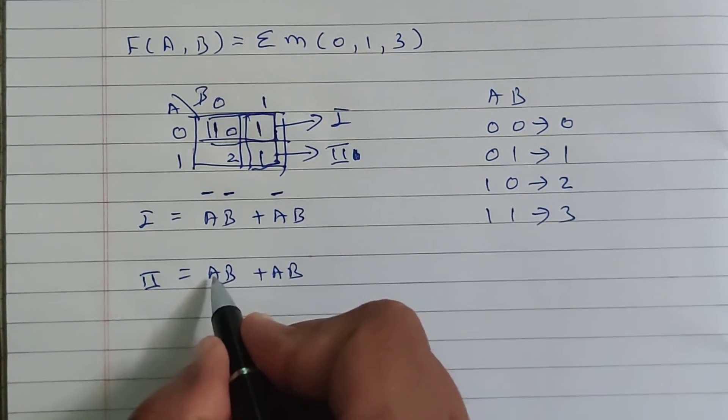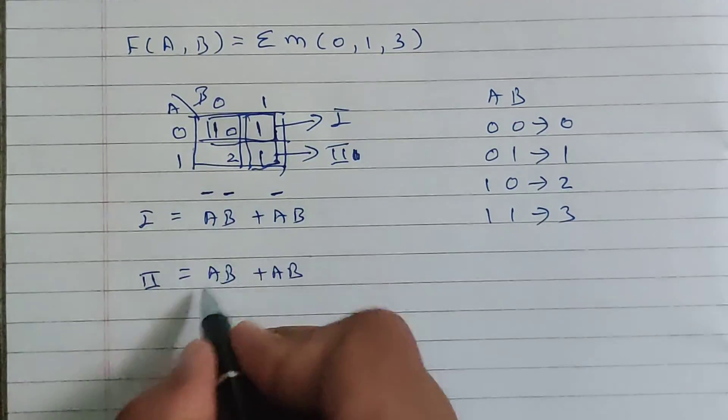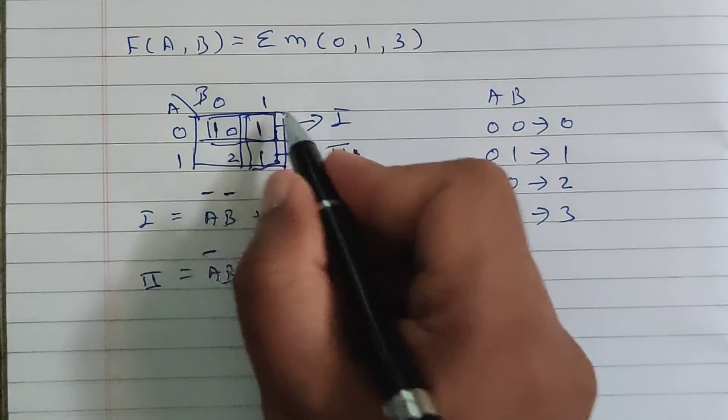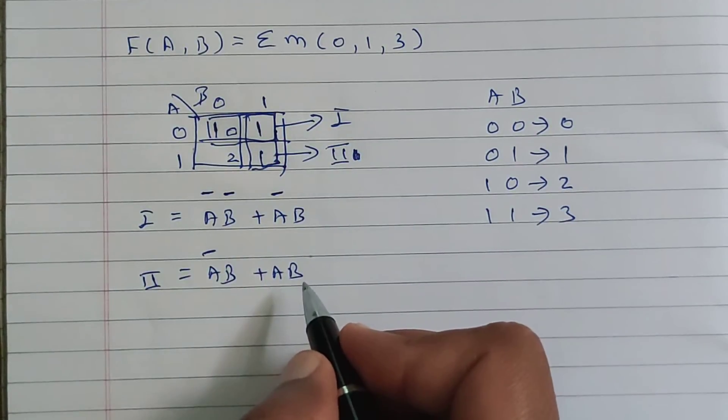Now over here, for this one, 0 1 is there. So A bar, B. And for this one, A is equal to 1, B is equal to 1. So it will remain as it is.